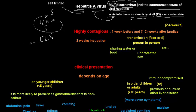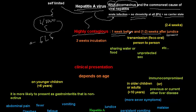Hepatitis A virus is highly contagious. The period of contagiosity is one week before and one to two weeks after the presence of jaundice or symptoms. You can isolate the patient when you see the jaundice, but unfortunately the patient has already been contagious for one week before jaundice appears. The jaundice itself lasts about two to four weeks.